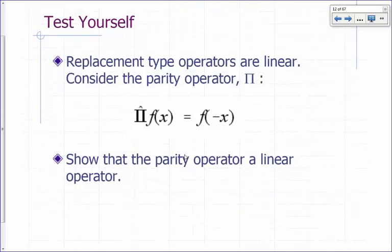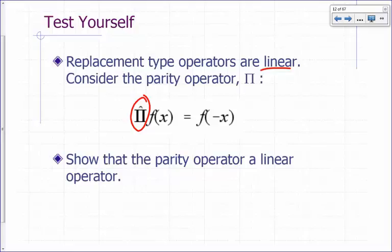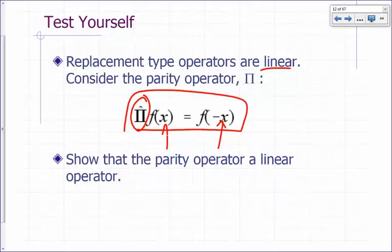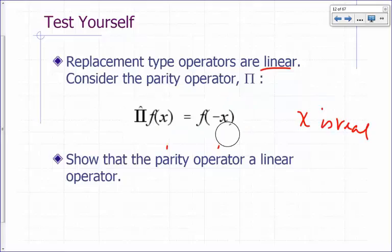Let's look at some types of operators you might encounter. A lot of operators involve replacements — replacement-type operators — and these are generally linear. Consider the parity operator: pi hat operating on a function F of X. The rule says that any time you see an X, replace it by negative X. We'll assume X is real — it's a coordinate, so it's a parity operator and it's a linear operator.